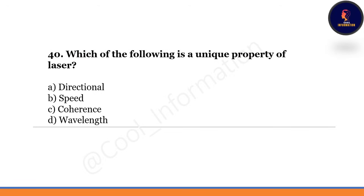Which of the following is a unique property of laser? Option A: directional. Option B: speed. Option C: coherence. Option D: wavelength. This is a very important question — it has been asked in previous GATE exams. Correct option is C — coherence is the unique property of laser.